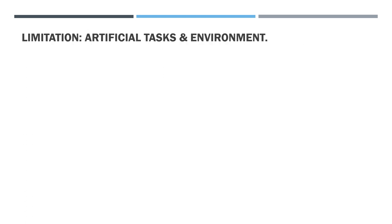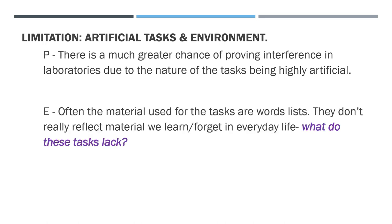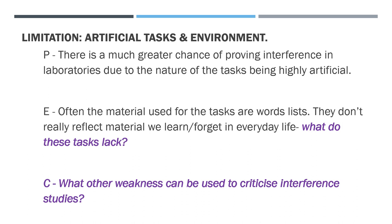The first weakness is artificial tasks and environment. There is a greater chance of proving interference in labs due to the nature of the tasks being artificial. Often the material used involves word lists, which don't really reflect what we learn or forget in everyday life. Consider the McGeoch and MacDonald study — they used word lists. What type of validity do these tasks lack? And what other weaknesses can be used to criticise these studies? You might counter-argue with a positive.